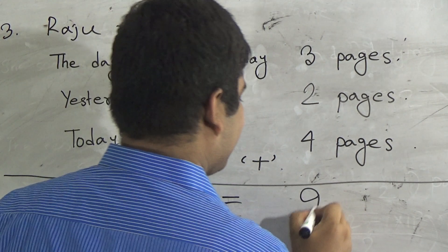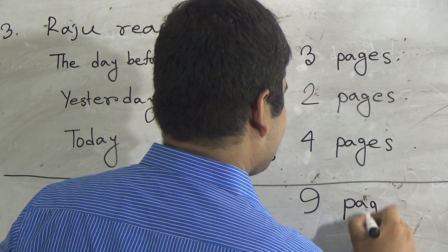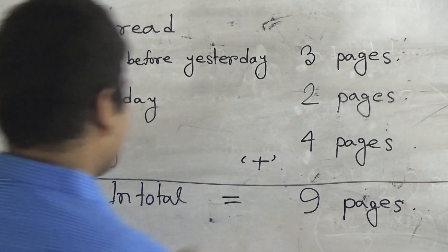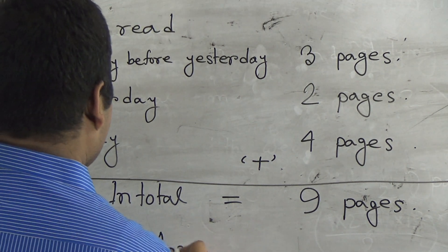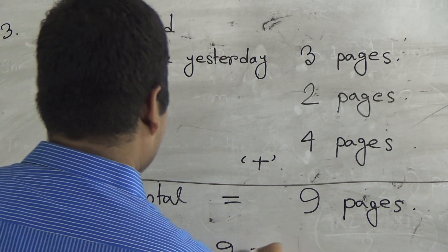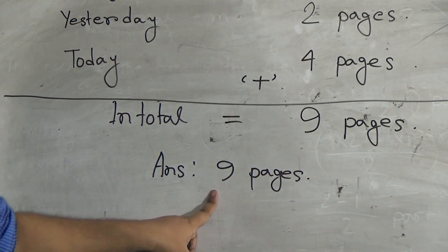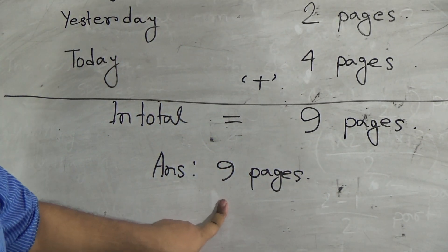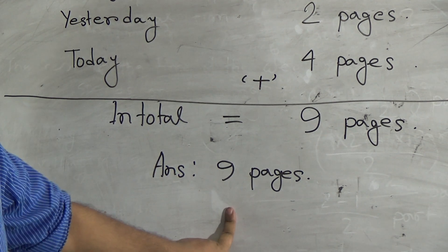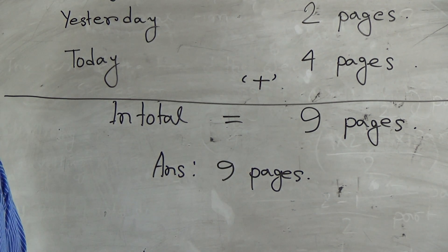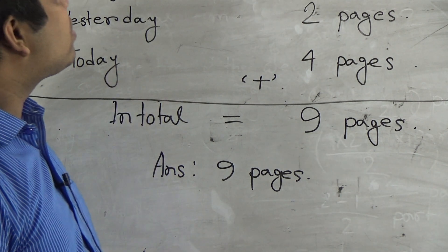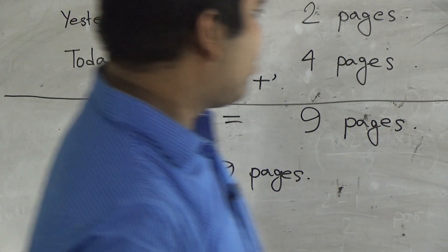So we get nine pages. This is the answer of this question. You must write the answer after solving a problem. If you do not write the answer, then some marks are deducted from your answer script. So you must always write the answer after solving a math. Question number 3 is done. Next we shall solve question number 4.